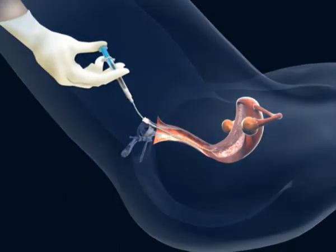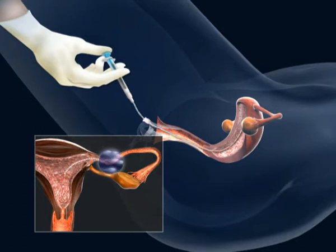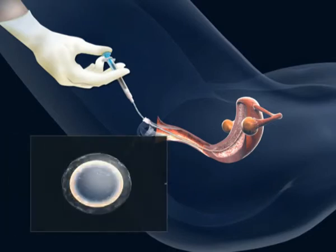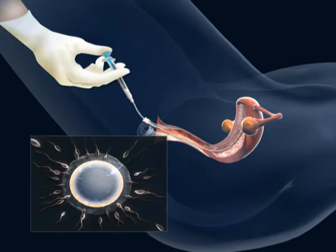The catheter that has been charged with sperm is introduced high into the uterus and the sperm ascends through the fallopian tubes, arriving at the area where the oocyte is located and fertilization of the oocyte is facilitated.